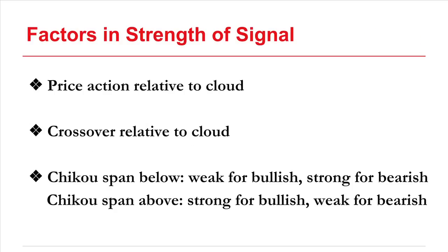There are a few other factors to consider in reading how strong these signals are. These factors are, as mentioned, price action in relation to the cloud — when it's above the cloud, bearish signals are weaker. Also, the position of the crossover relative to the cloud: if it's above, the bullish signal is stronger and the bearish signal is weaker. And finally, the strength of a signal is also affected by the performance of the Chiku Span. When the Chiku Span is below the cloud or below price action, that is weak for a bullish signal and strong for a bearish signal. Whereas when the Chiku Span is above, it strengthens a bullish signal and weakens a bearish signal.